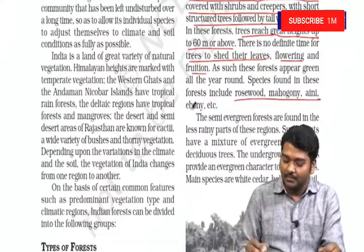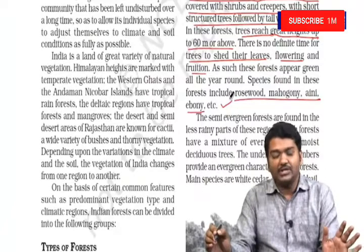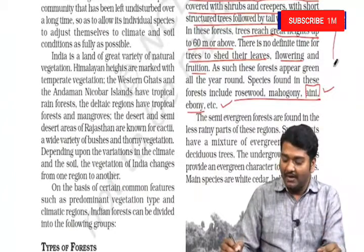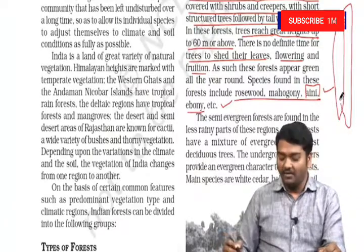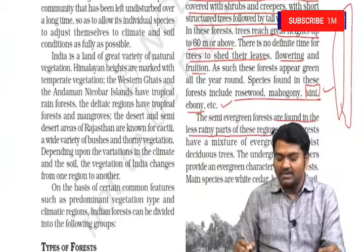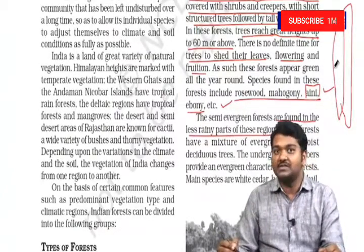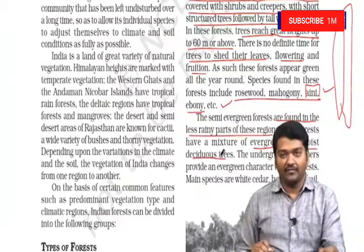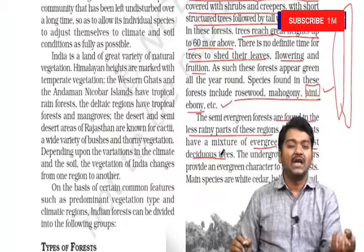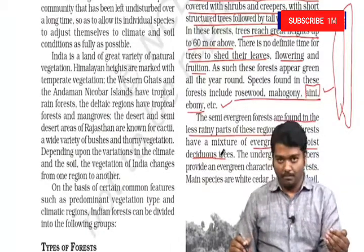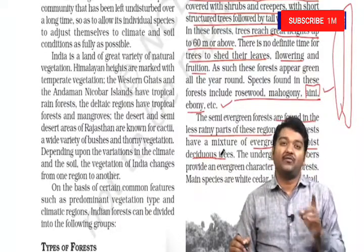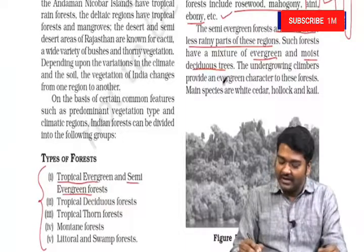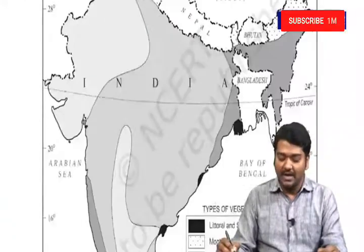Some of the most important trees are rosewood, mahogany, and ebony — UPSC usually asks about these. The semi-evergreen forests are found in the less rainy parts of this region. On the western side of Western Ghats, the extreme west gets evergreen and just beside that you get semi-evergreen. Such forests have a mixture of evergreen and moist deciduous forests. Deciduous means they don't receive rainfall in some seasons — in winter or summer leaves may shed. The undergrowing climbers give an evergreen character to these forests, which is why it is called a semi-evergreen forest.